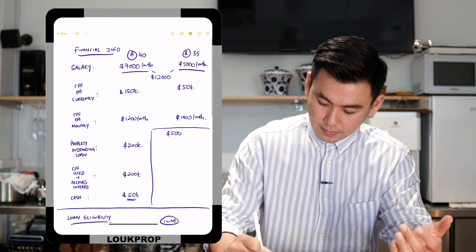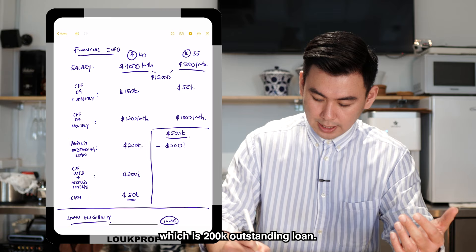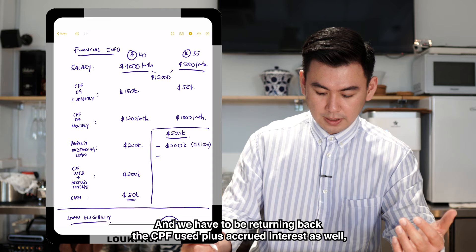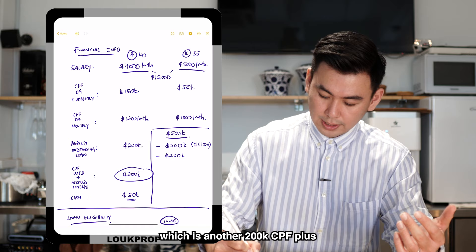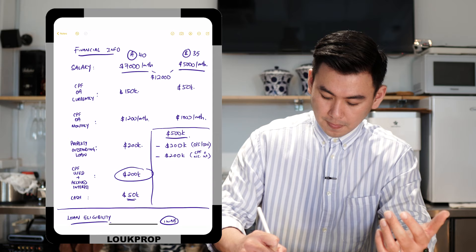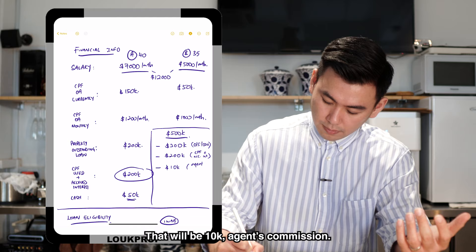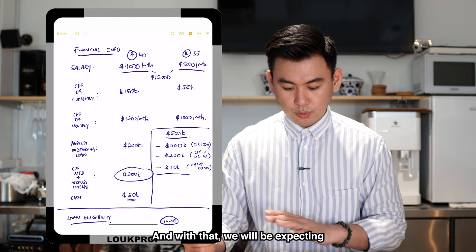Let's assume they can sell their current HDB or property for about $500,000. To calculate cash proceeds: first, return the outstanding loan of $200,000; second, return the CPF used plus accrued interest of $200,000; and third, pay agent's commission — at a standard market rate of 2% on $500,000, that's $10,000. After all deductions, they are left with approximately $90,000 in cash proceeds from the sale.